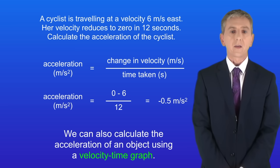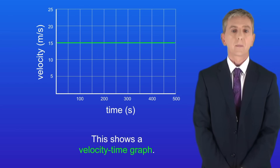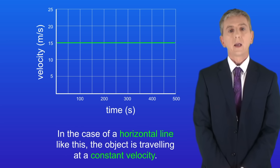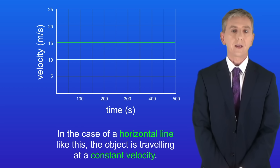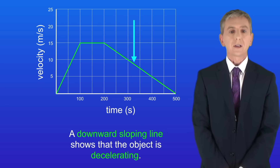We can also calculate the acceleration of an object using a velocity-time graph. A key fact is that the gradient of a velocity-time graph tells us the acceleration of the object. In the case of a horizontal line, the object is travelling at a constant velocity. An upward sloping line shows that the object is accelerating, whereas a downward sloping line shows that the object is decelerating.